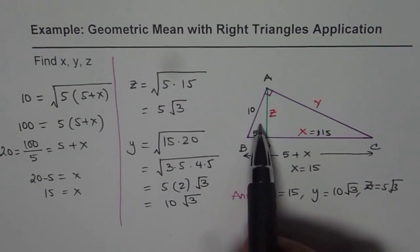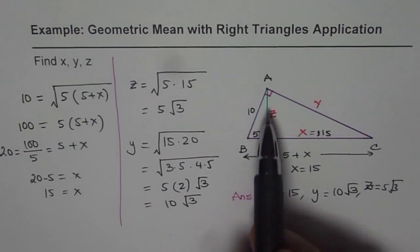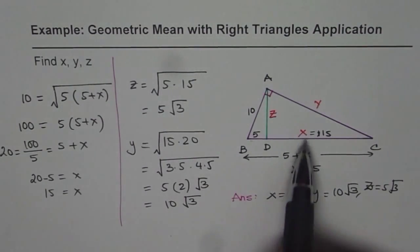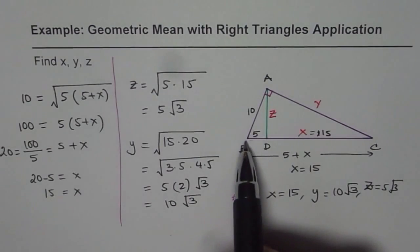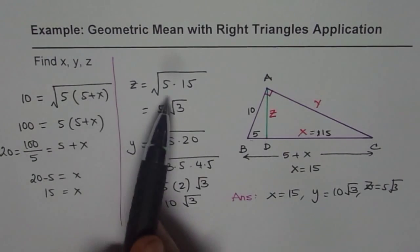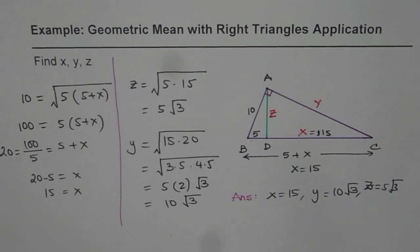Otherwise you have to prove that we have 3 similar triangles here. Triangle ABD is similar to triangle ADC, and these 2 triangles are also similar to triangle ABC. So with these 3 similar triangles you can always find or develop the relation and get the answer. That's an alternate way of doing it.